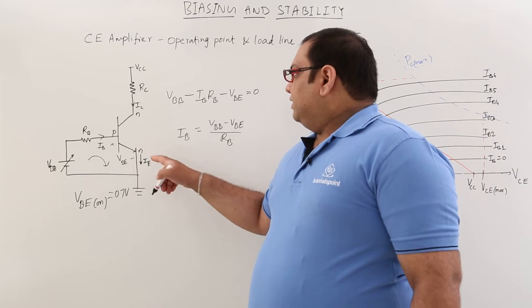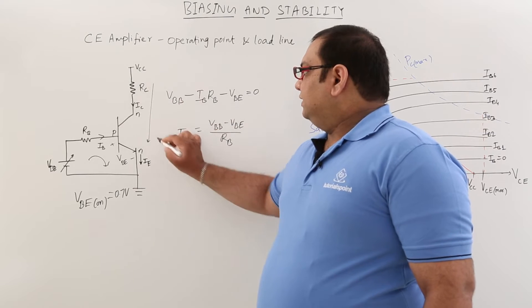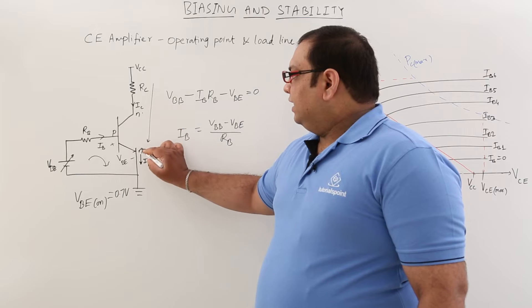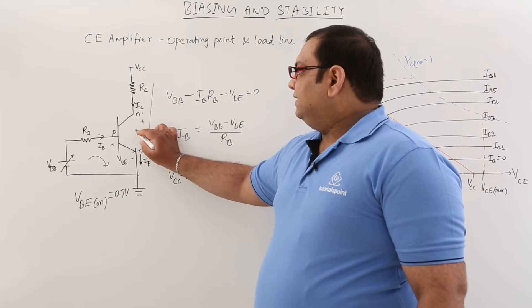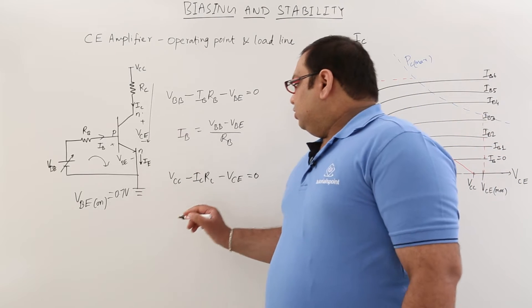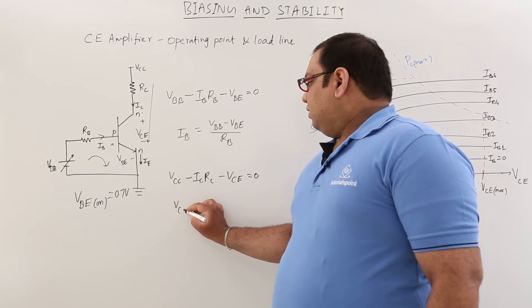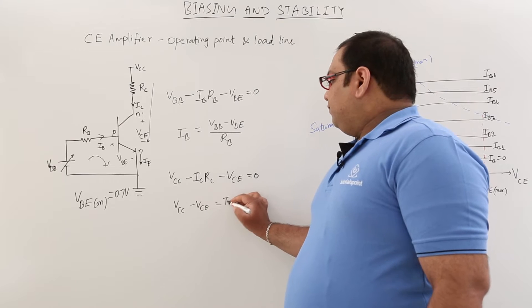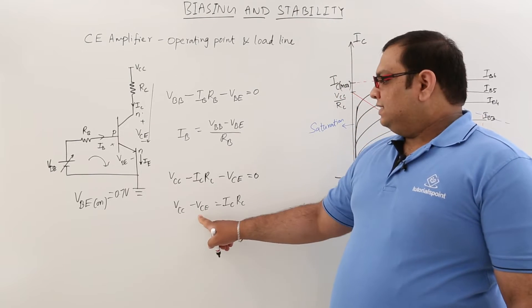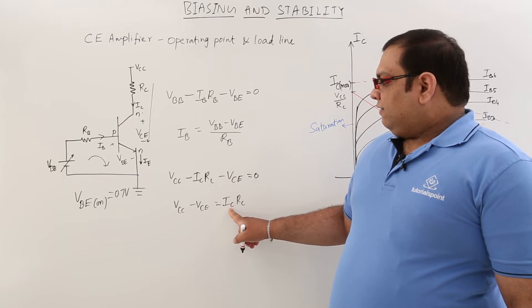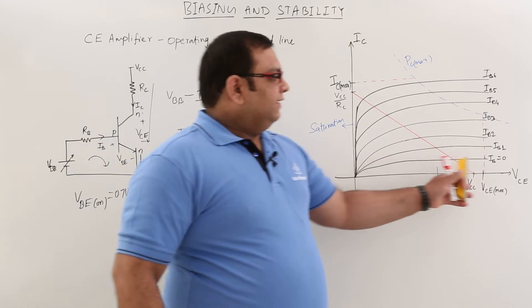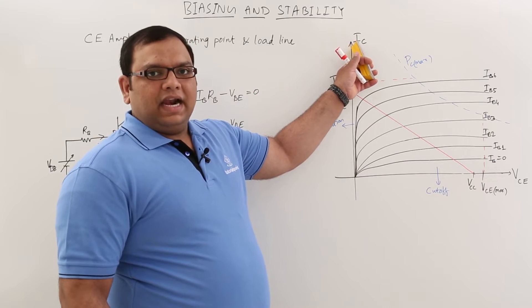Similarly, taking the output loop KVL equation: VCC minus IC times RC minus VCE equals 0, giving VCC equals IC·RC plus VCE. By changing the value of VCC, we get different values of IC as well as VCE. We can determine IC and VCE for different values of VCC and draw a graph of IC versus VCE.